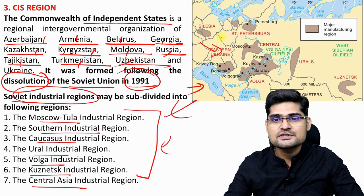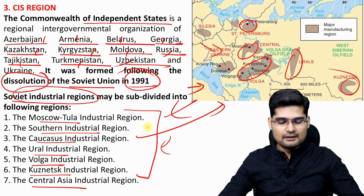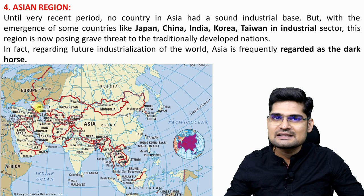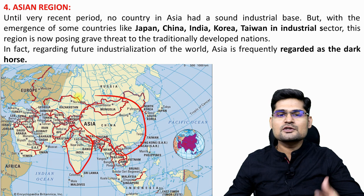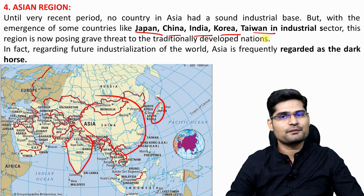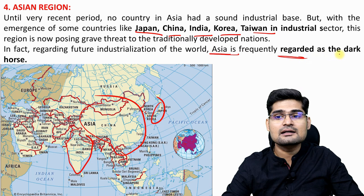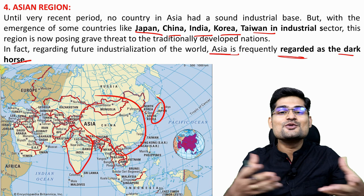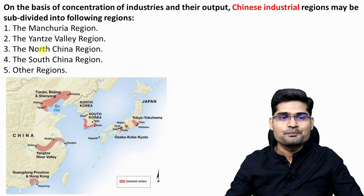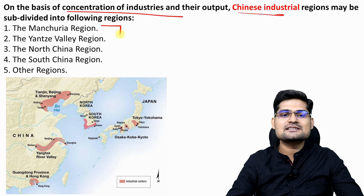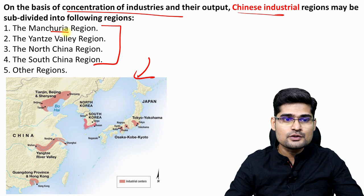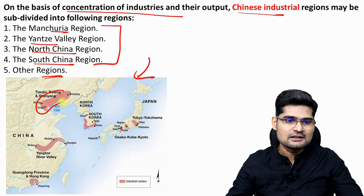The Asian industrial region includes Japan, China, India, Korea, and Taiwan as major hubs. Asia is frequently regarded as the 'dark horse' because the future of industrialization and the market is here, given its huge population. Chinese industrial regions are further subdivided into Manchuria, Yangtze, North China, South China, and several other regions — reflecting China's leading position in global manufacturing.